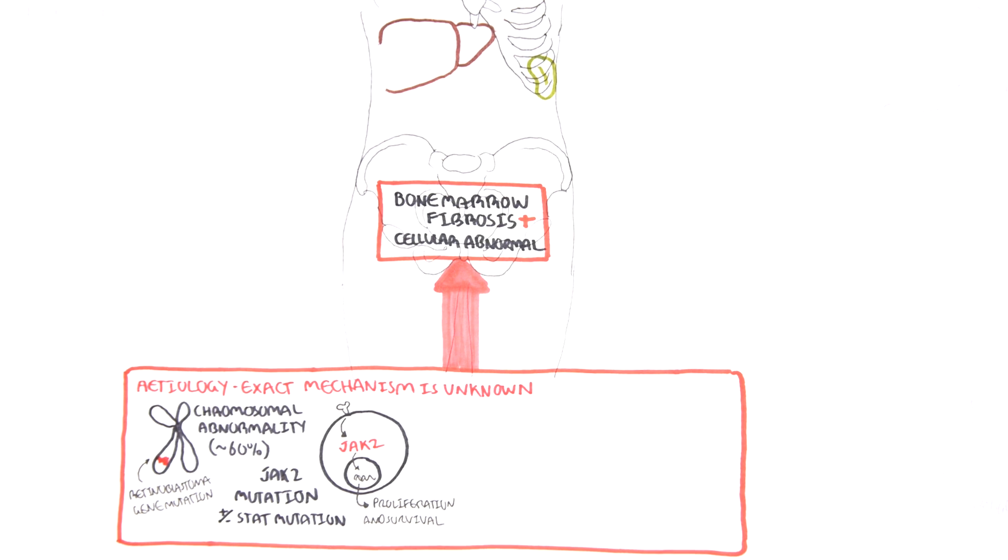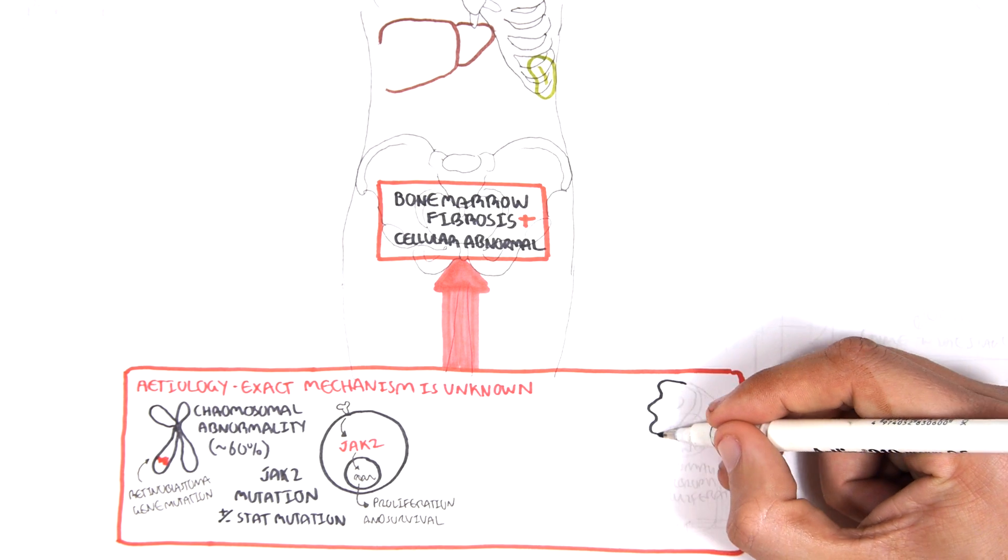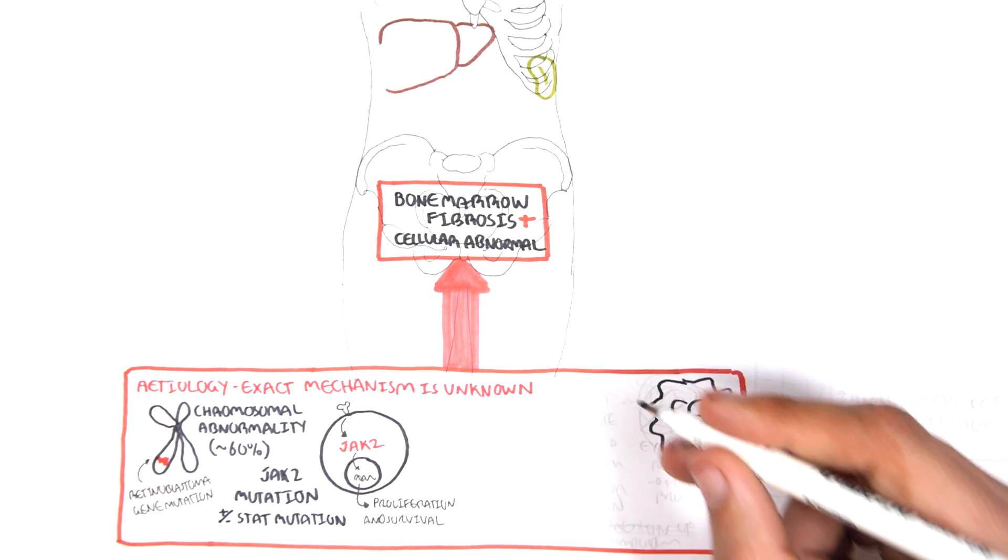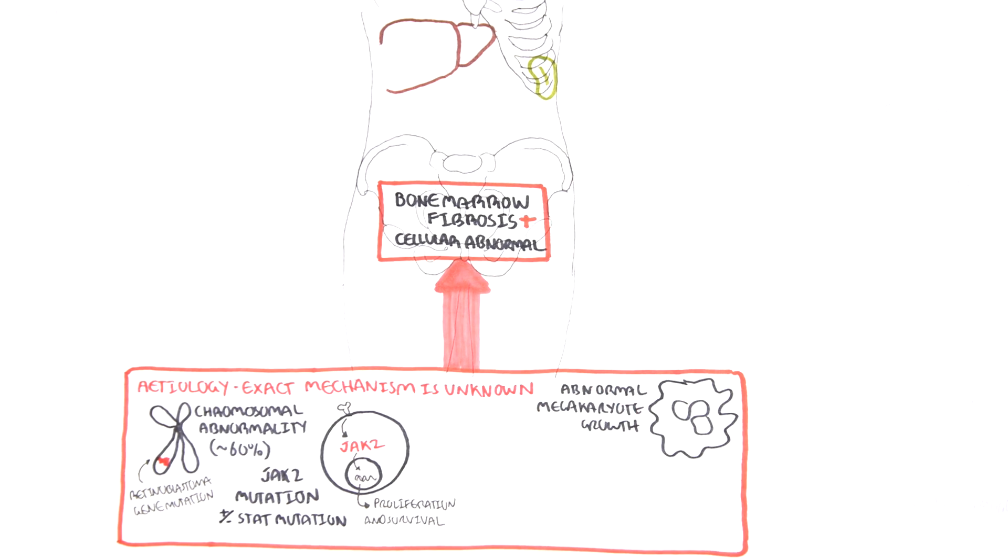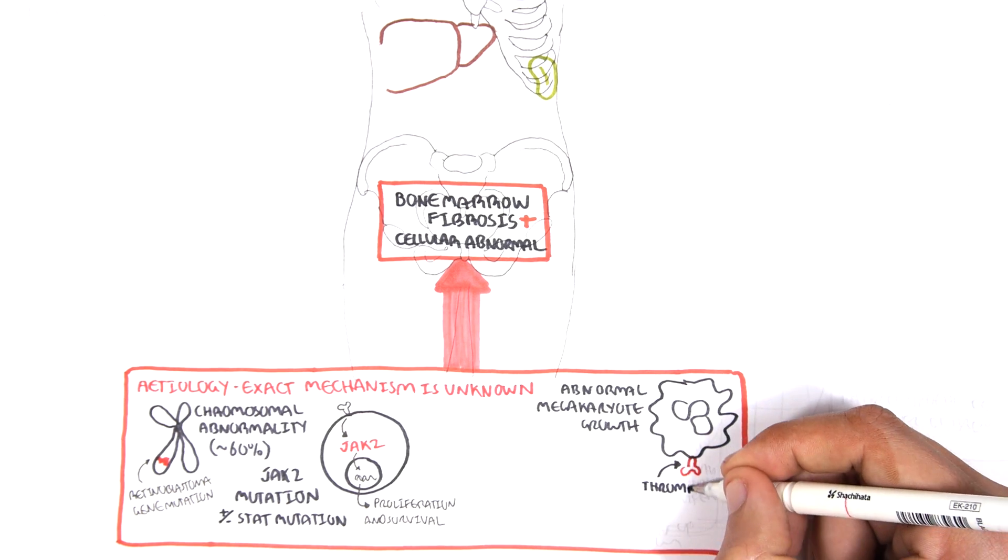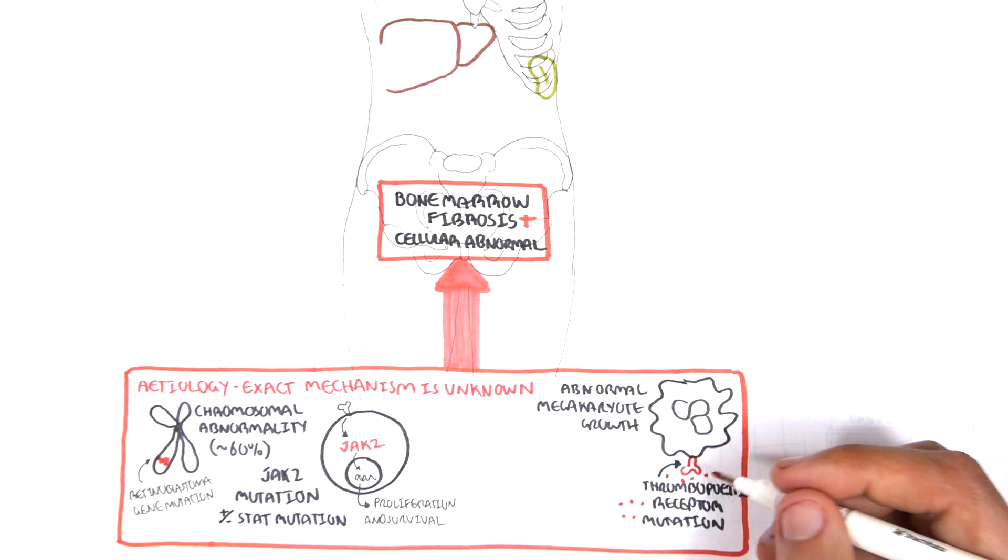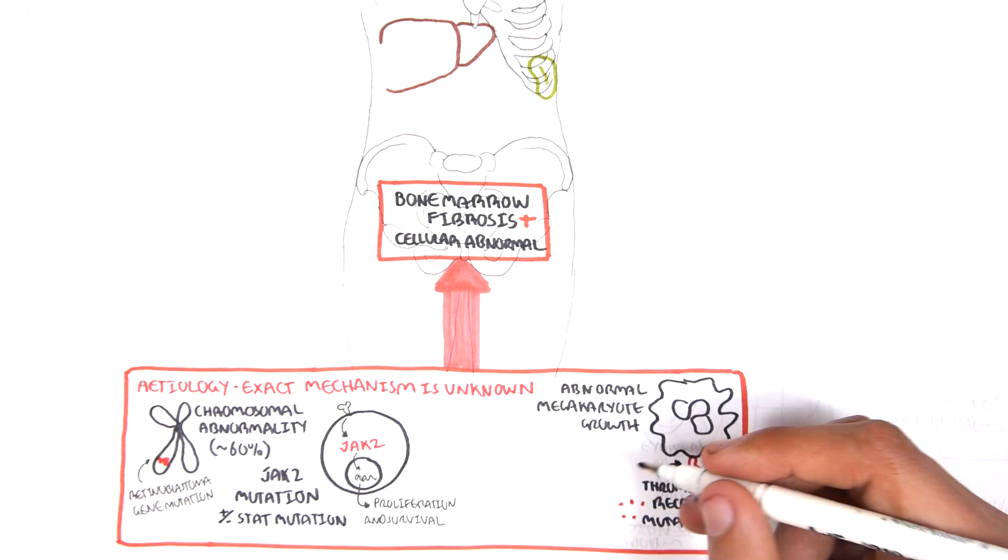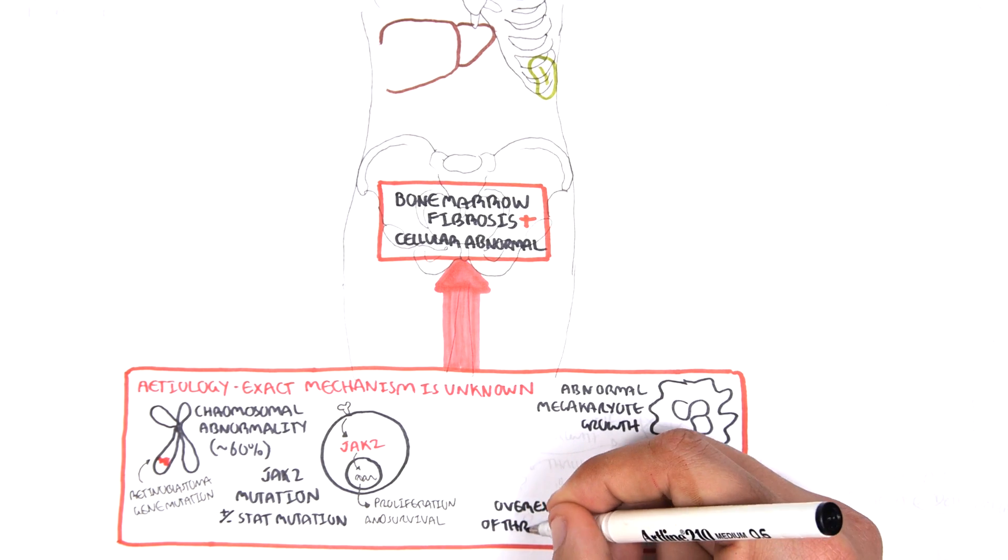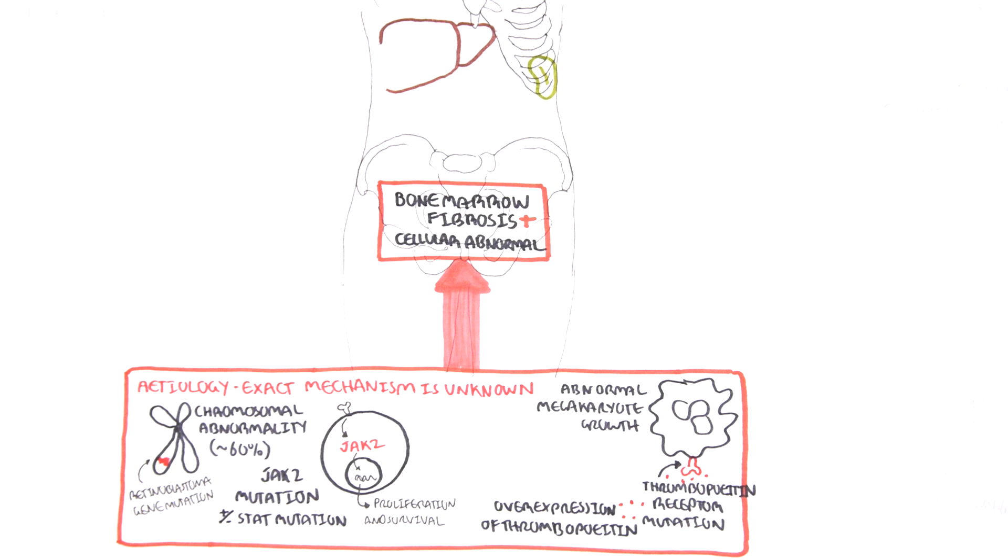A common feature of primary myelofibrosis found in the bone marrow is megakaryocyte growth and abnormal hyperplasia of these cells. And there are many causes of this. Some ideas include thrombopoietin receptor mutation or overexpression of thrombopoietin itself. Thrombopoietin is a hormone, a factor, which stimulates megakaryocyte development and therefore stimulates platelet production. Platelets are also known as thrombocytes.